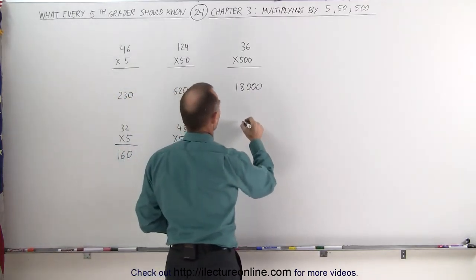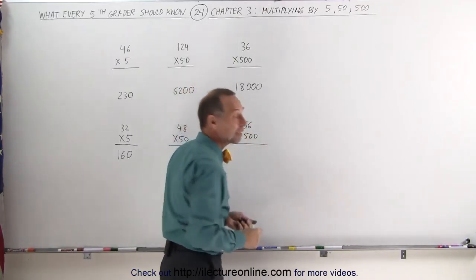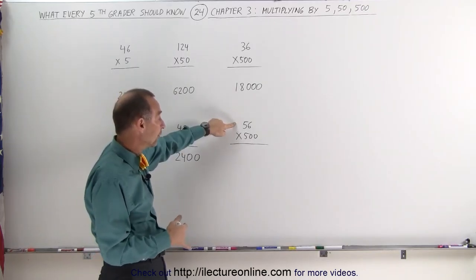How about this number? 56 times 500. Now that seems like a difficult thing to do, but again, take half of 56, which is 28. 28 times 2 is 56.